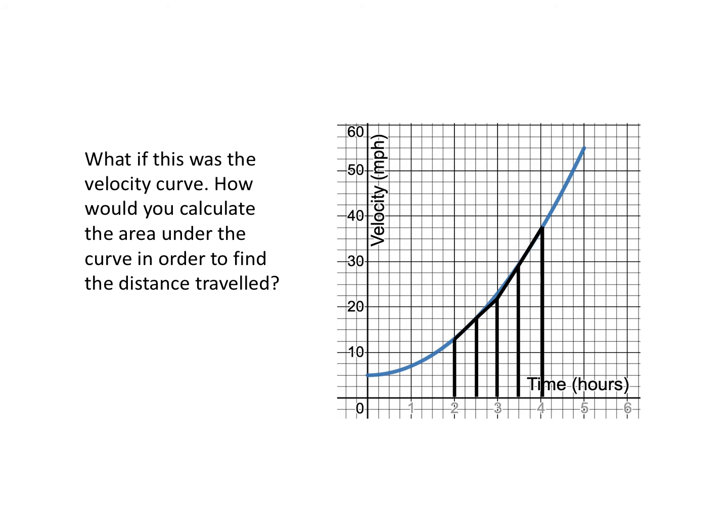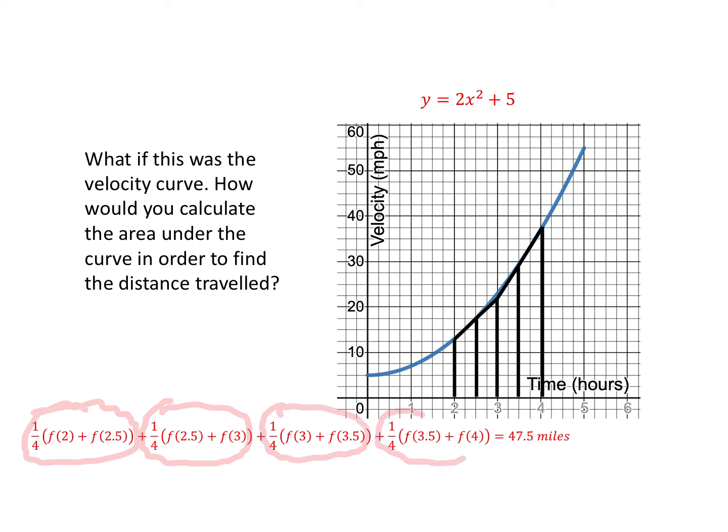How are we going to calculate that area? Here are the formulas. The trapezoids have a height of one-half. We've got one-half over 2, so that becomes one-fourth. The sum of the bases in the first case are f(2) + f(2.5). Then we have 1/4 times [f(2.5) + f(3)], then 1/4 times [f(3) + f(3.5)], and lastly 1/4 times [f(3.5) + f(4)], equaling an area under the curve of 47.5 miles.